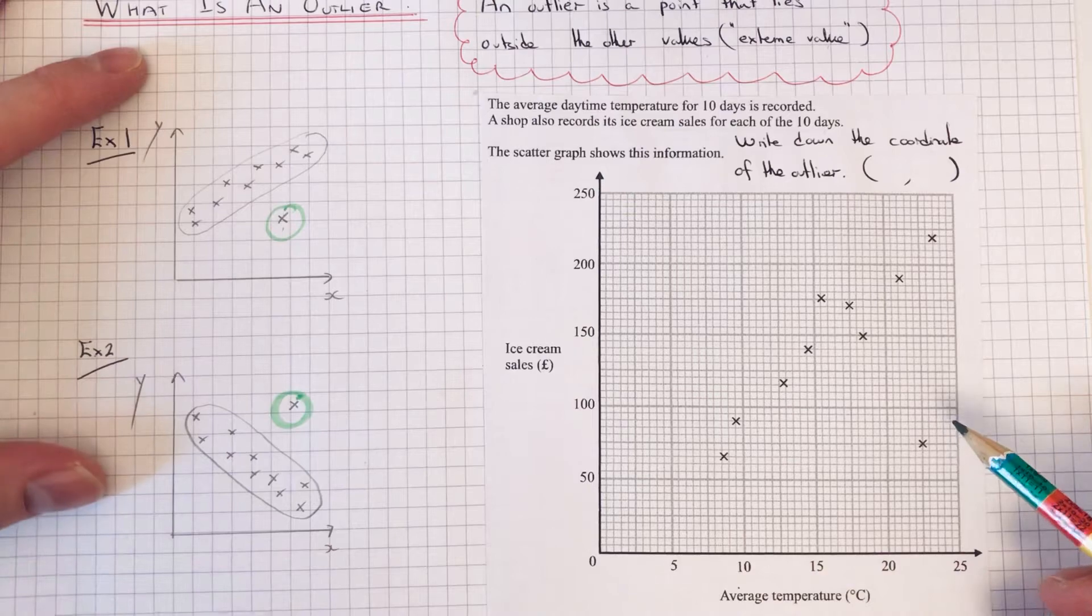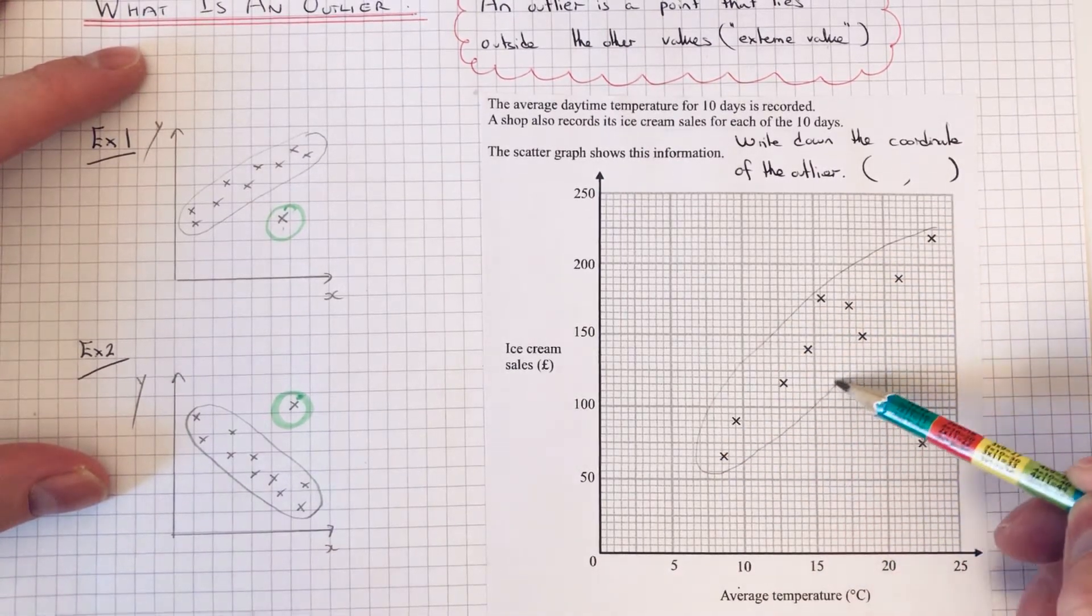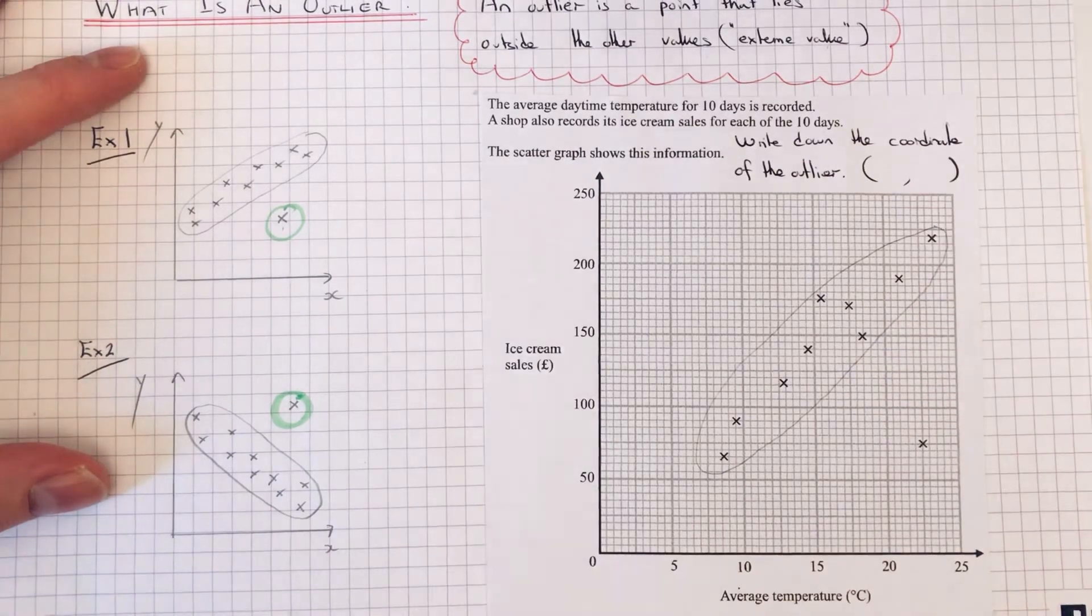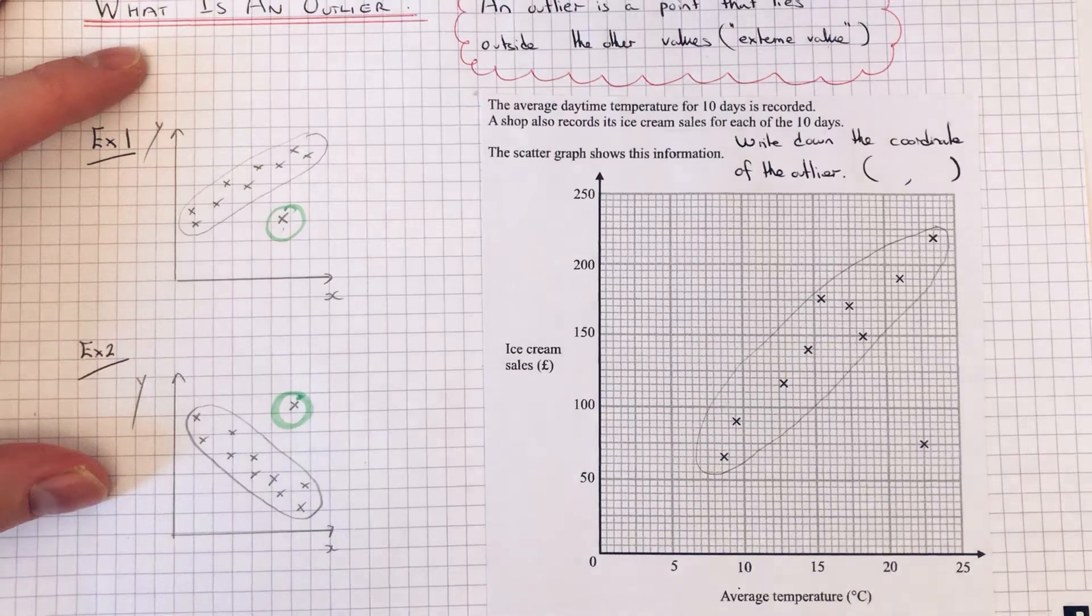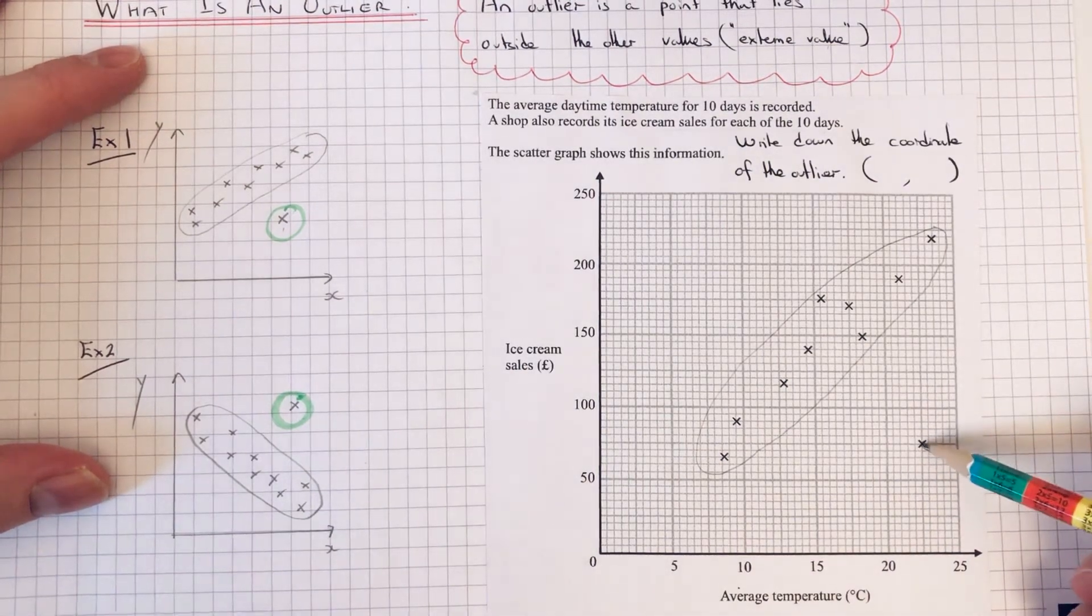Again, we can see most of our points are in this bit here. As the temperature increases, the ice cream sales also increase. The one which is not within these points is this one here.